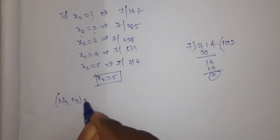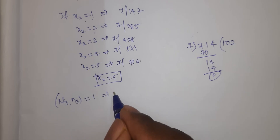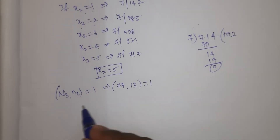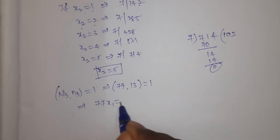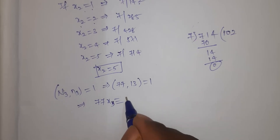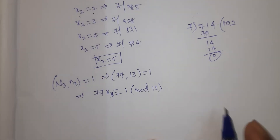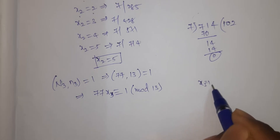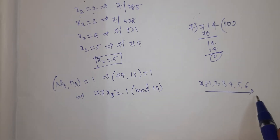Now for N3: gcd(77, 13) = 1, which implies 77·x3 ≡ 1 mod 13. Testing x3 = 1, 2, 3, 4, 5, 6 and positive values.